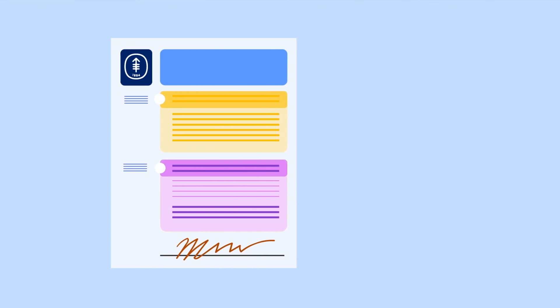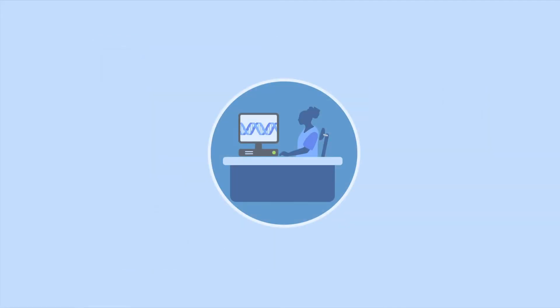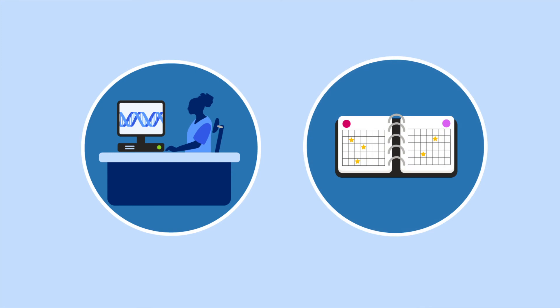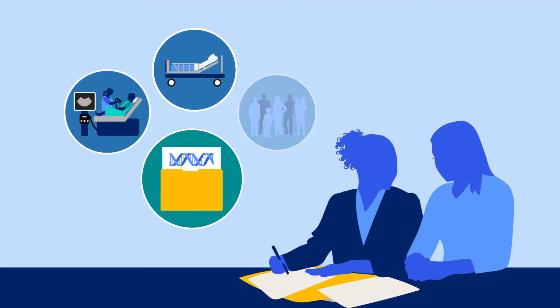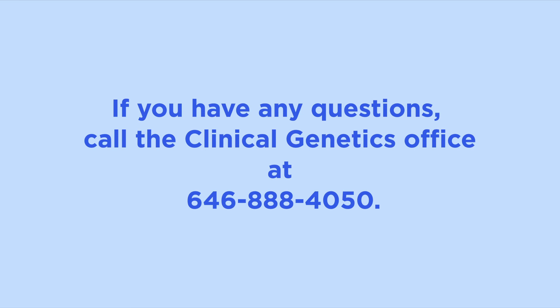If you decide to get genetic testing, you'll first sign a consent form that reviews the risks and benefits of testing. Then, you'll make an appointment to have your blood drawn or have a saliva collection kit mailed to your home. When the lab gets your blood or saliva sample, we'll ask you to schedule your genetic counseling consultation. During your consultation, we'll talk with you about your results and our cancer screening or prevention recommendations for you. We'll also talk about what your results mean for your family. It usually takes a few weeks to get your results back. We hope you found this information helpful. If you have any questions, call our office at 646-888-4050.